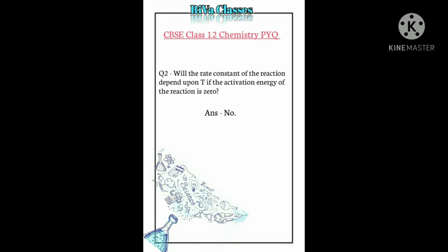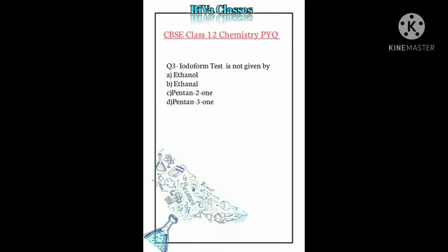Question number three: The iodoform test is not given by which of the following — (a) ethanol, (b) ethanal, (c) pentan-2-one, (d) pentan-3-one? An aldehyde or ketone with a methyl group adjacent to the carbonyl group gives a positive iodoform test. So pentan-3-one does not give the iodoform test.